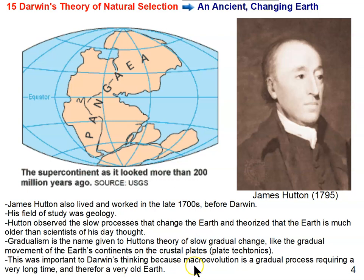This was important to Darwin's thinking because macroevolution — big evolutionary changes in species over time, such as one species giving rise to new species — is a very gradual process that requires a long time. So the earth being very old was an important piece of the puzzle for Darwin. Also, since the earth has changed so much over time, species would have had to change along with it in order to survive on the changing earth.